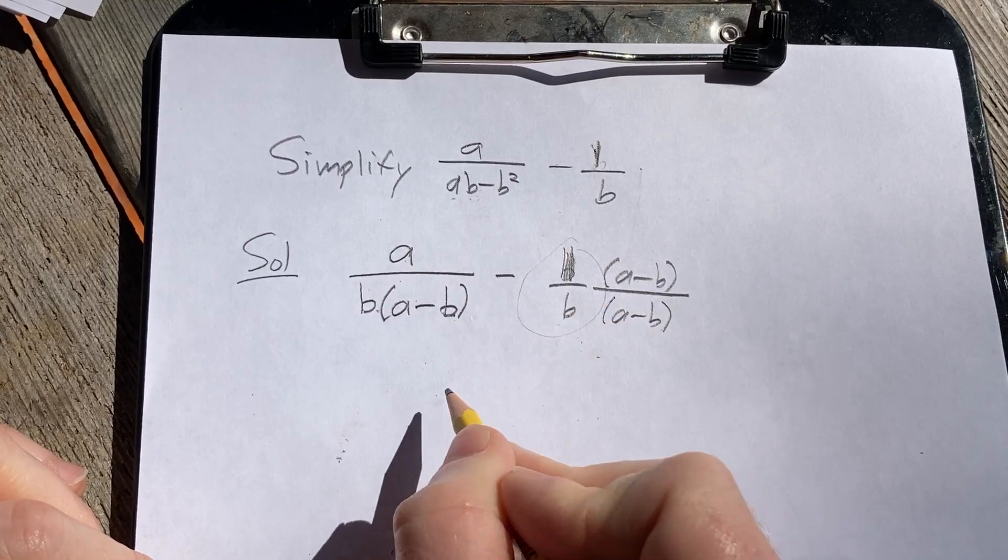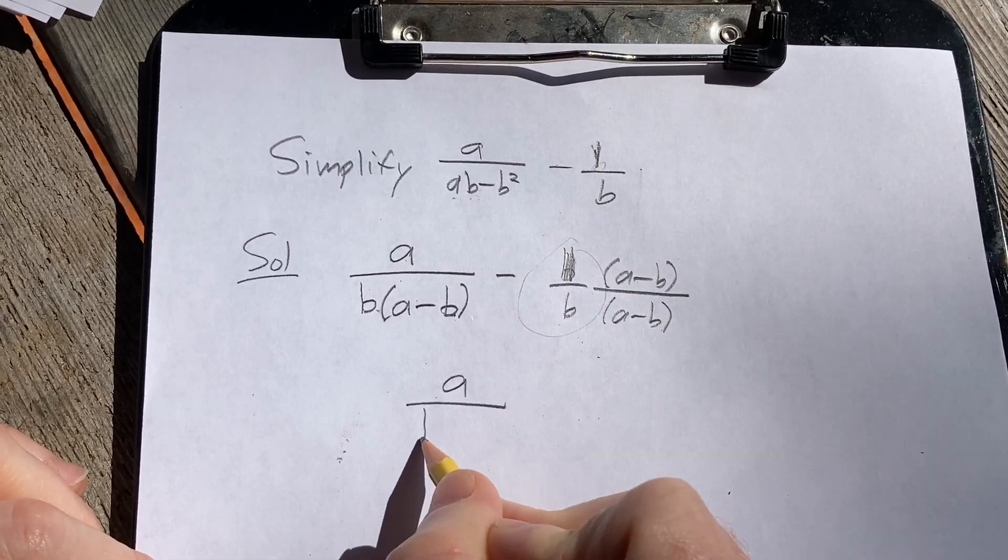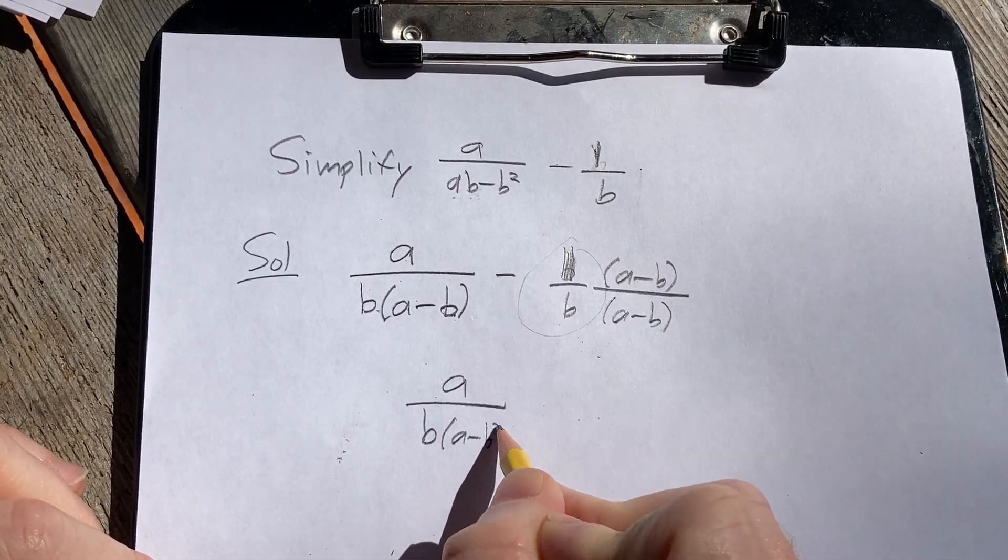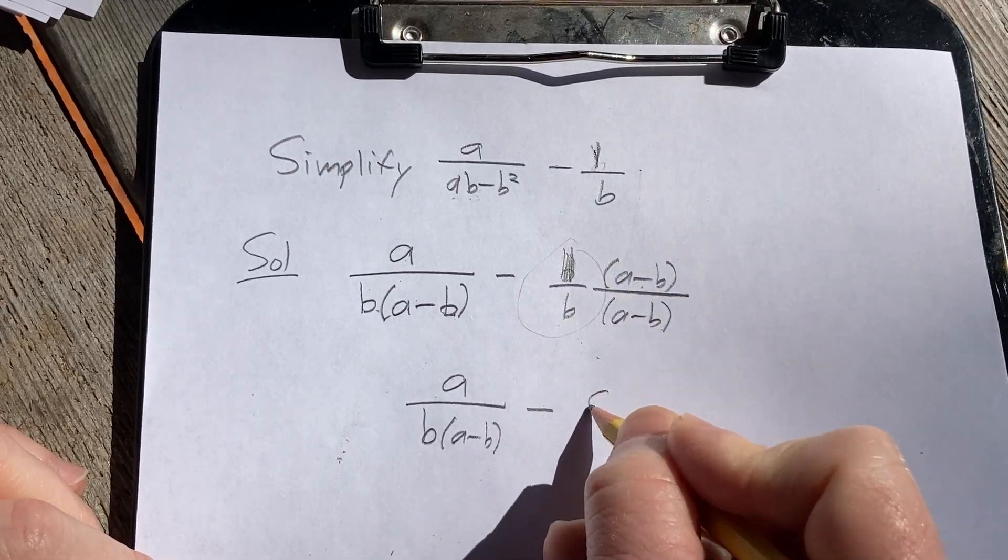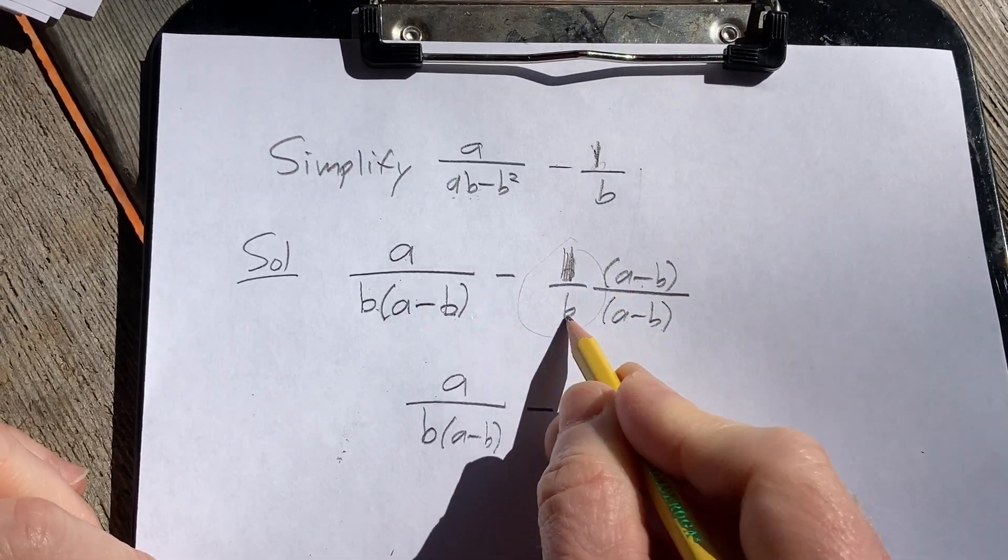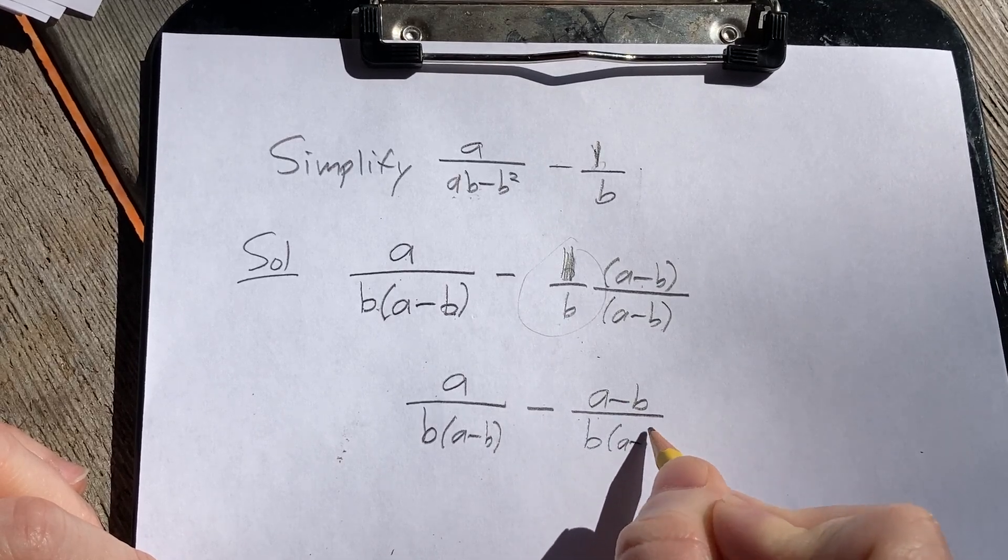Now this becomes a over b times parentheses a minus b, minus 1 times a minus b is a minus b, over b times a minus b.